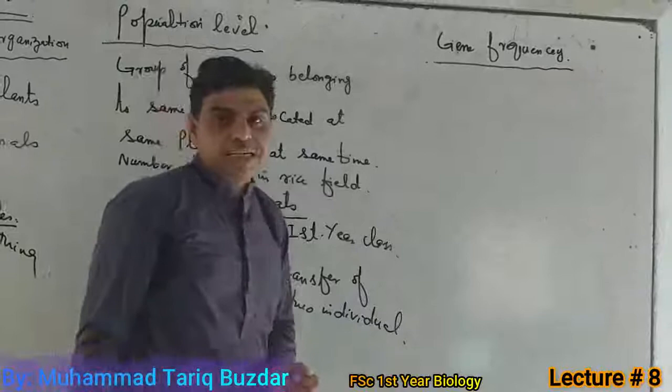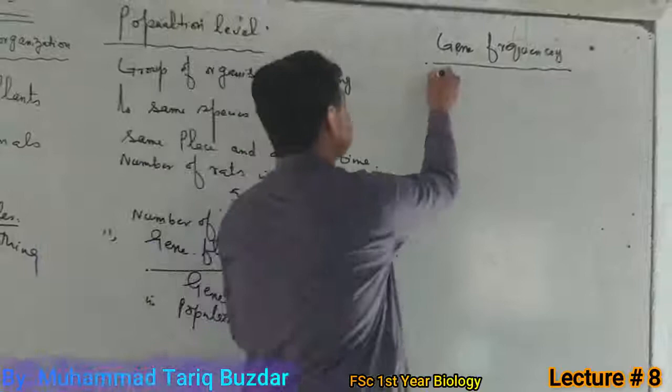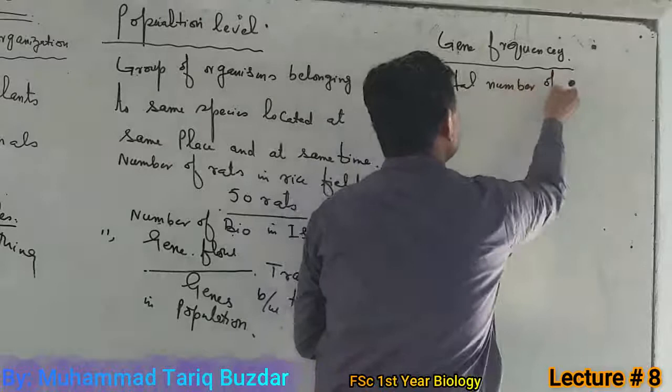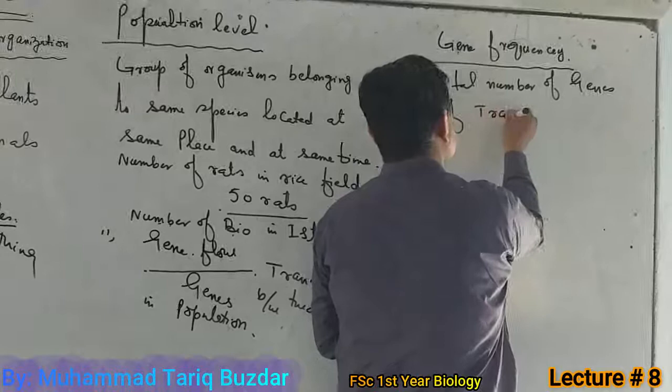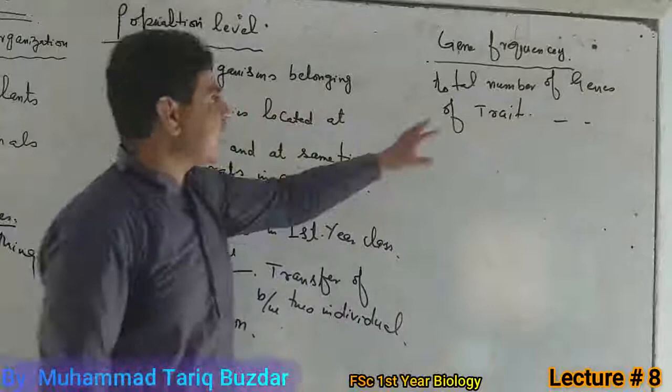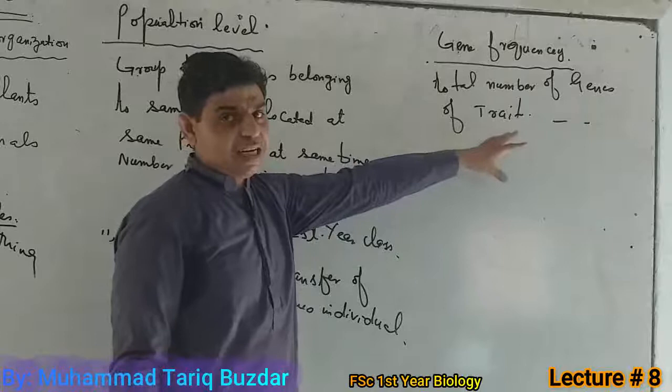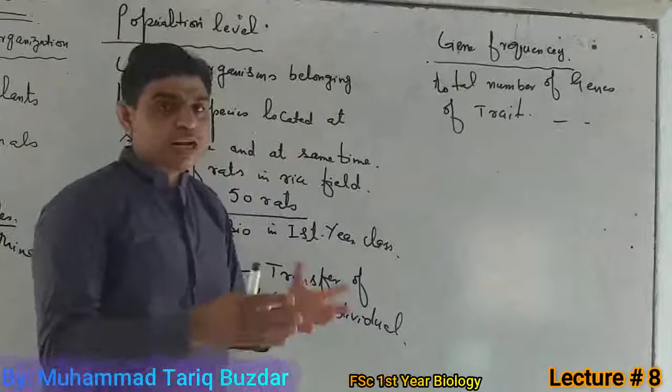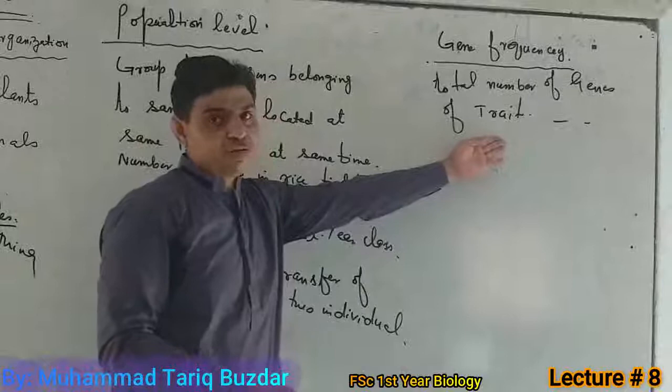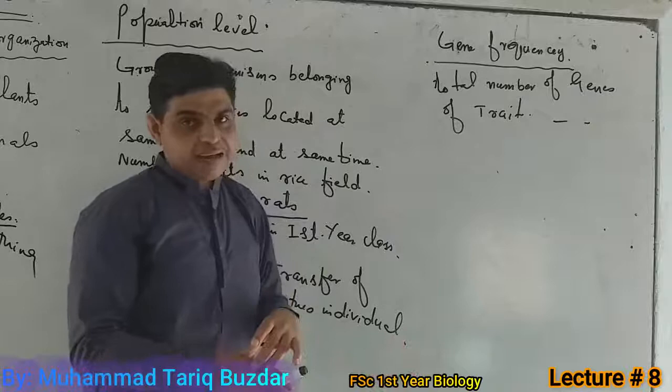The total number of the genes of our traits in a population is called as gene frequency. A population can be defined by the total number of genes which are characteristics such as eye color, blood group, skin color, height, and intelligence.